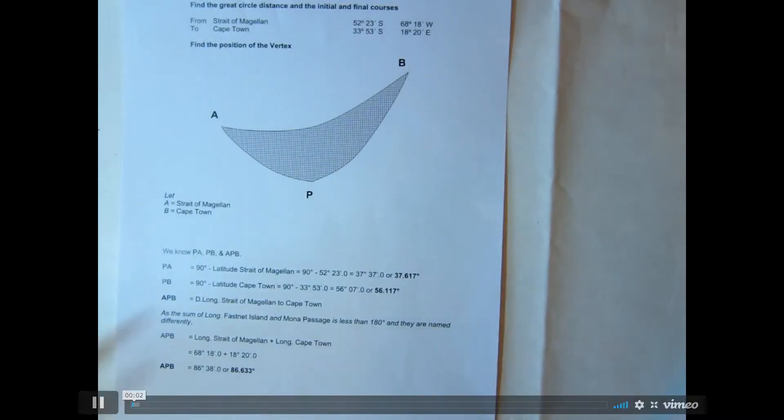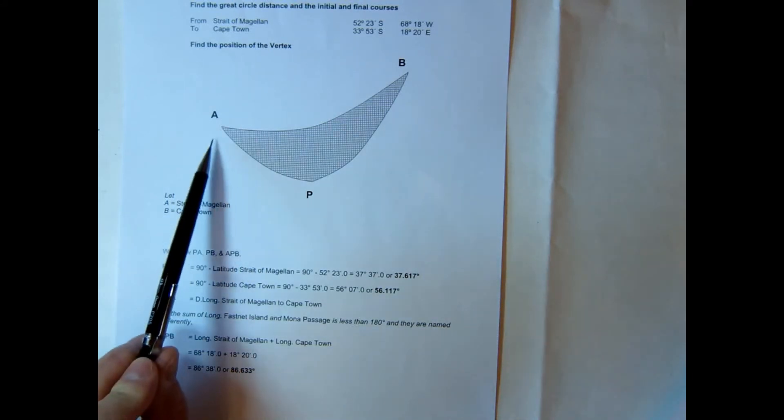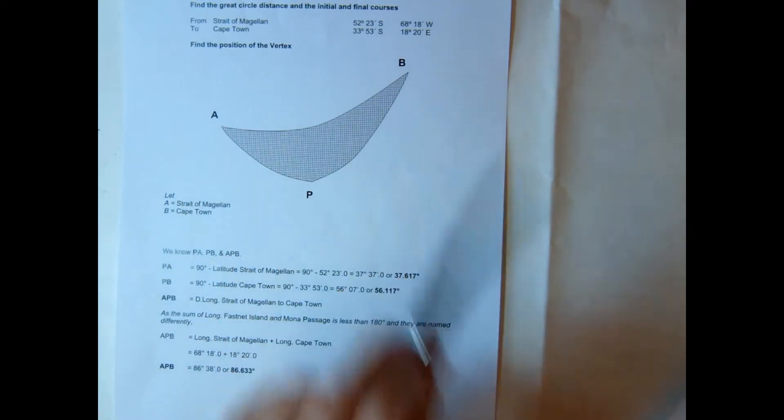Okay, we'll have a look at a great circle problem, a typical problem where you're asked to calculate distance, courses, and the position of the vertex. Position A is where we're starting off, position B is where we're going to end up.